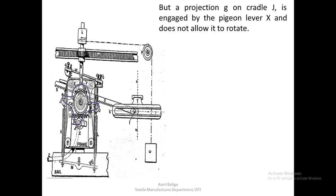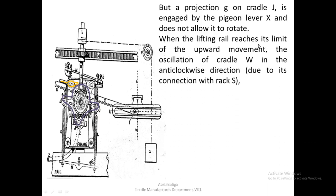Cradle J has a small projection marked G and the pigeon lever engages with J. Even if there is a lot of tension in the system due to the upward movement of the bobbin rail, J will be prevented from oscillating in the anti-clockwise direction. When the lifting rail reaches the limit of its upward movement, the oscillation of cradle W is such that it brings screw A into connection and tries to press the tail of the pigeon lever.